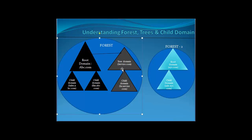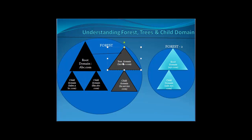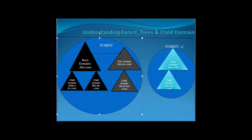When we create a child domain and a tree domain together, it completes the forest. Inside the blue circle we have a root domain, a child domain, and a tree domain — that constitutes a complete forest structure. For comparison, Forest 2 has a root domain xyz.com and a child domain sales.xyz.com — this is an entirely different forest.